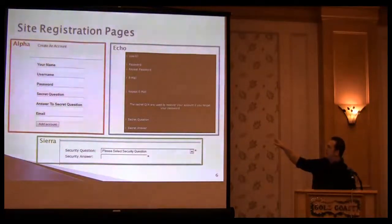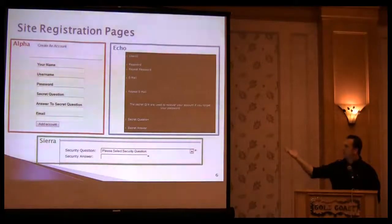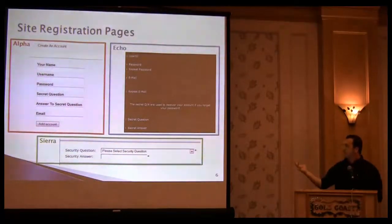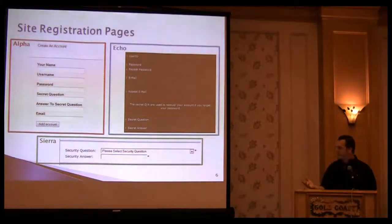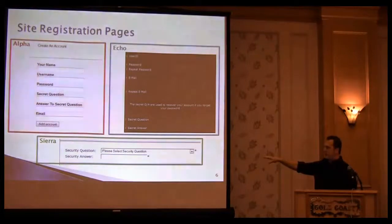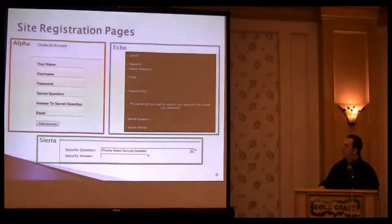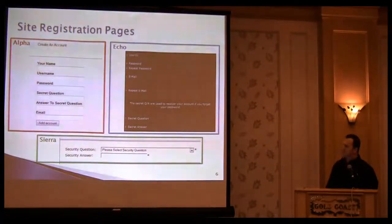What's obvious that we're seeing? No real instruction to the user. What is the purpose of the secret question? At least in Echo's case, they say this is used to recover your account if you forget your password. But it doesn't explain what makes a good question or concerns about security questions. Sierra had pre-selected questions—five that users could select and answer. Both Alpha and Echo had completely free-form questions and answers.